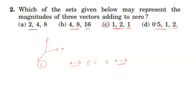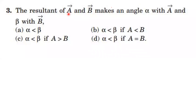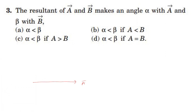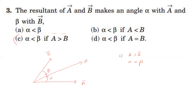Third question: the resultant of vector A and vector B makes angle alpha with A and angle beta with B. Two vectors A and B are given, and the resultant vector makes angle alpha with A and angle beta with B. We know the resultant lies nearer to the greater vector, meaning the angle with the greater vector is smaller. So if A is greater than B, then alpha is less than beta. Therefore, option C is correct.